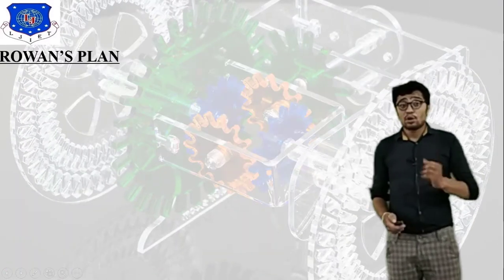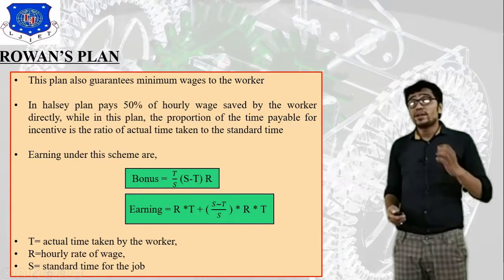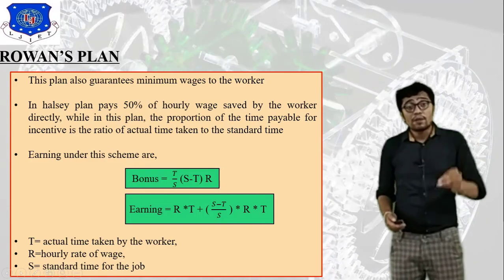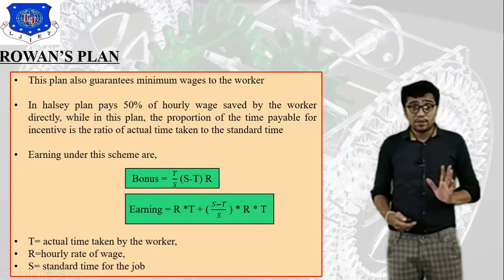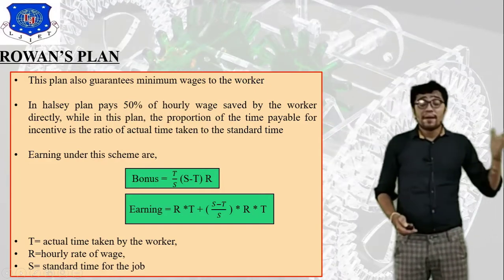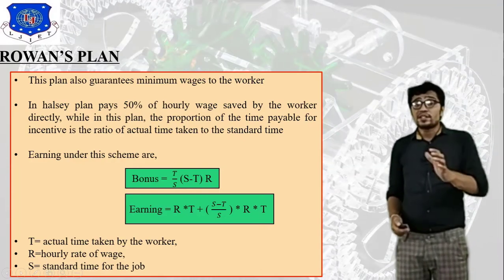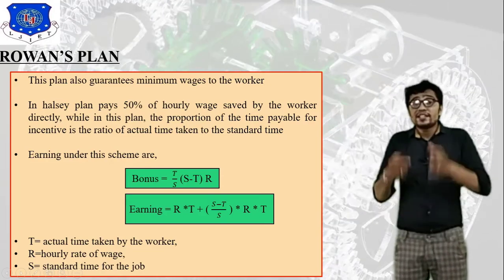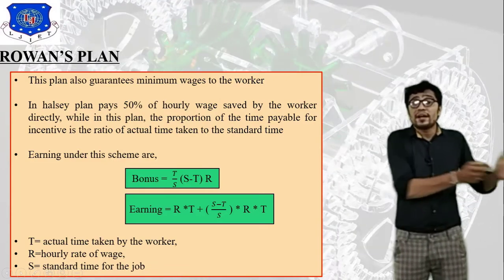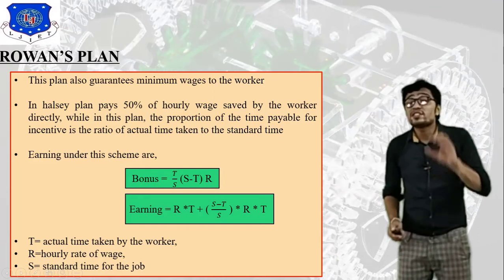Moving on to Rowan's plan. In Rowan's plan, there is also a guaranteed minimum wage to the worker. The key difference from the Halsey plan is this: in the Halsey plan, 50% of the hourly wage saved is paid directly to the worker, while in Rowan's plan the proportion of time payable as incentive is the ratio of actual time taken to the standard time — that is, actual time divided by standard time. This ratio is the basis of the Rowan's incentive plan.